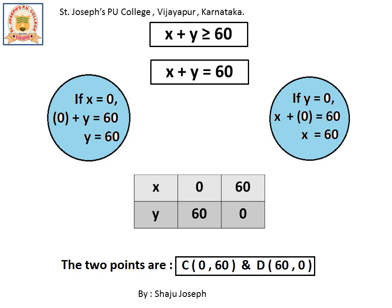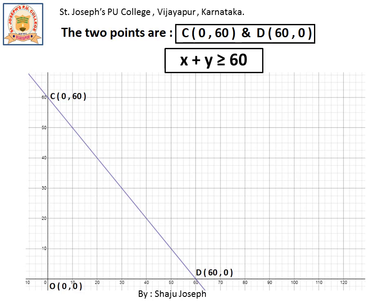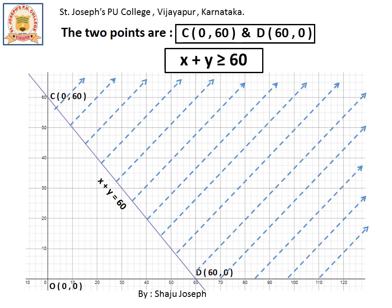Now it is time to plot C and D on the graph and analyze this inequality separately, since there are three constraints to analyze one by one. When we substitute (0, 0) into the inequality x plus y greater than or equal to 60, we get 0 plus 0 equals 0, which is not greater than or equal to 60. So 0 cannot be greater than or equal to 60. Hence the origin is not on the side that should be shaded, and since the origin is on the lower left side, we shade the upper right side.